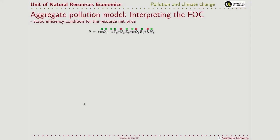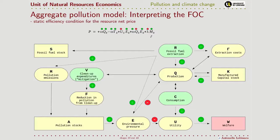Concerning the last equation — the static efficiency condition for the resource royalty — initially the equation looks pretty complicated, but when you analyze it using the flowchart it becomes easy to understand. We are speaking about the control variable: choosing the level of resource to extract.